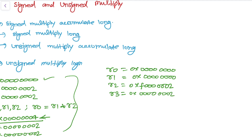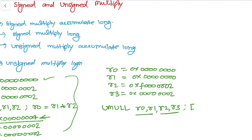We have R0, R1, R2, and R3, and we write the instruction UMULL R0, R1, R2, R3. In this case the result will be placed into R0 and R1, and it will multiply registers R2 and R3. So the result will be placed into R0 and R1.